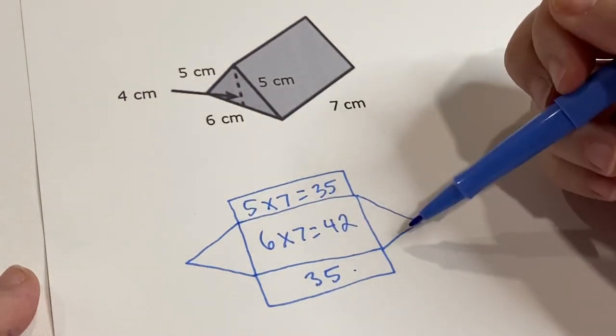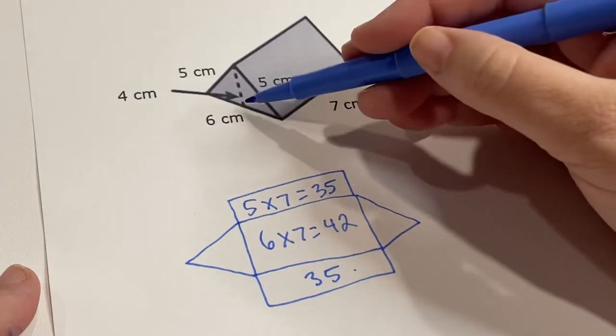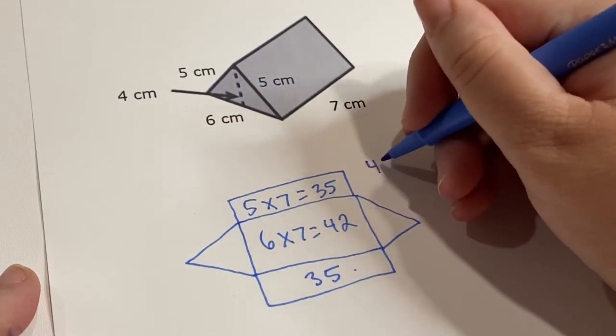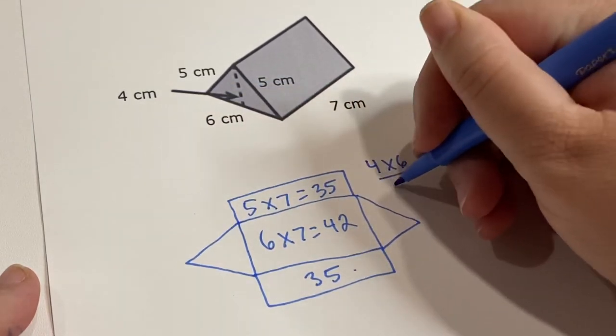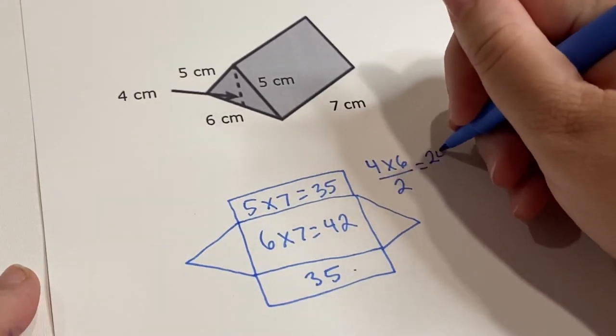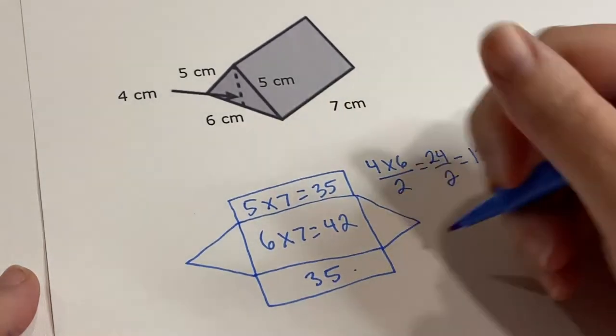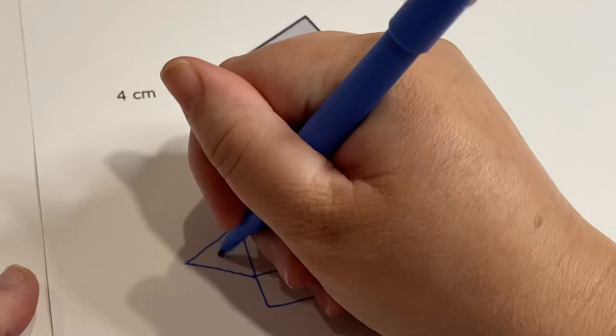And then our two triangles, which are the same, they are, the base is 6 and the height is 4. So 4 times 6 divided by 2. Base times height divided by 2, which is going to equal 24, divided by 2, which is equal to 12. So this is 12, and this is 12.